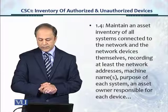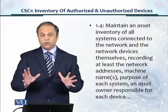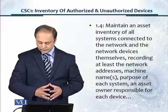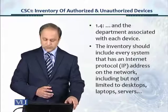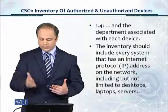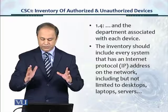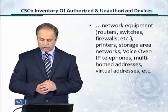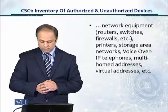Control 1.4: maintain an asset inventory of all systems connected to the network and the network devices themselves, recording at least the following information: network addresses, machine names, purpose of each system, an asset owner responsible for each device, and the department associated with each device. This can be in the form of an Excel sheet. The inventory should include every system with an IP address on the network, including desktops, laptops, servers, network equipment, routers, switches, firewalls, printers, storage area networks, VoIP telephones, multi-homed addresses, virtual addresses, etc.